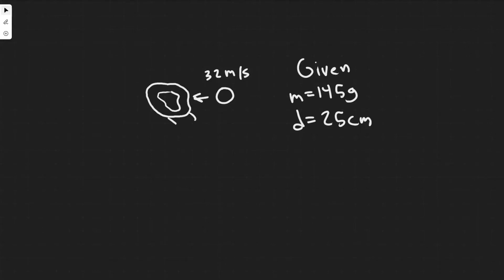In this problem, we are told a baseball M equals 145 grams traveling 32 meters per second moves a fielder's glove backward 25 centimeters when the ball is caught. What was the average force exerted by the ball on the glove?